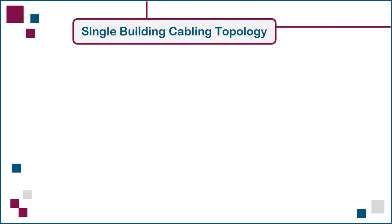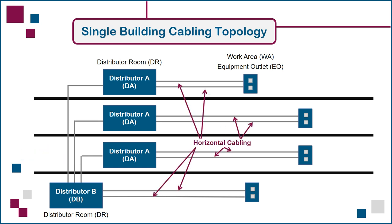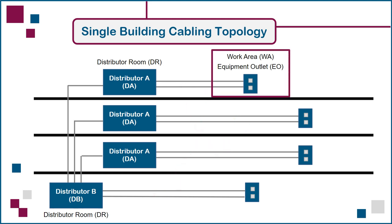Let's now look at the generic cabling model as applied to a single-building environment. In this side view of a four-floor building, backbone cabling links Distributor B in the building's distributor room to individual Distributor A's in distributor rooms on each floor. The second link in the chain is horizontal cabling, linking Distributor A on each floor to each of the equipment outlets on the same floor. Note that historically, equipment outlets were associated with individual work areas, such as enclosed offices and open cubicles. In today's intelligent buildings, outlets are likely to be located everywhere, to enable connections of network devices such as security cameras, building controls, lighting, and audio-video equipment such as digital signage screens.